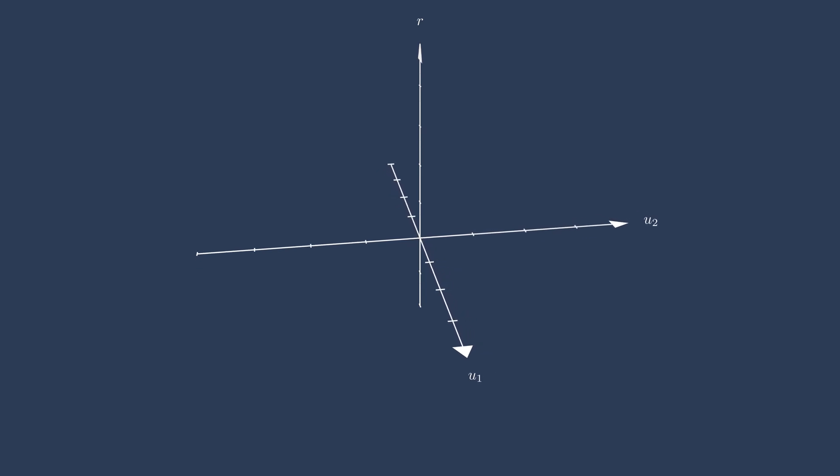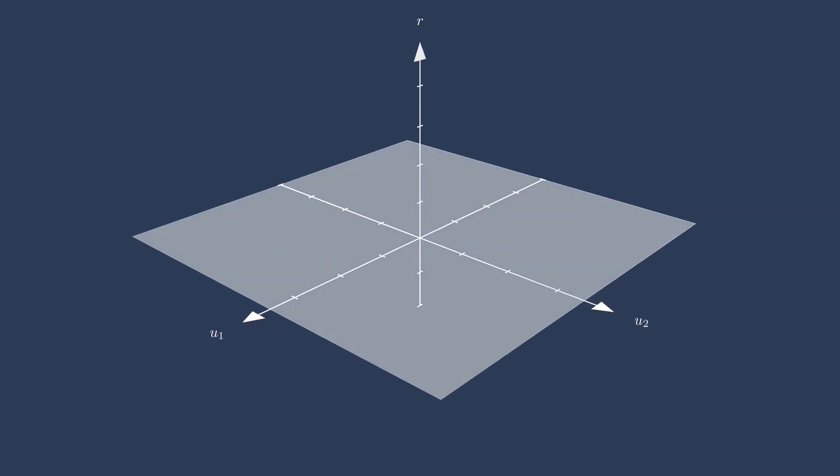We want to find the values of the two states that make both residuals zero. In other words, we want to find the u1 and u2 values where both residuals intersect this plane.